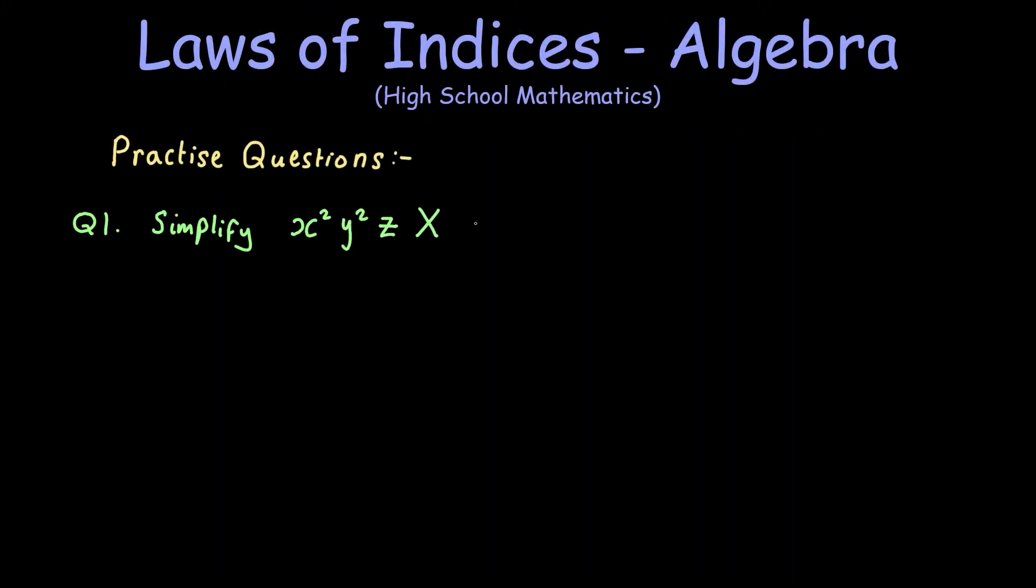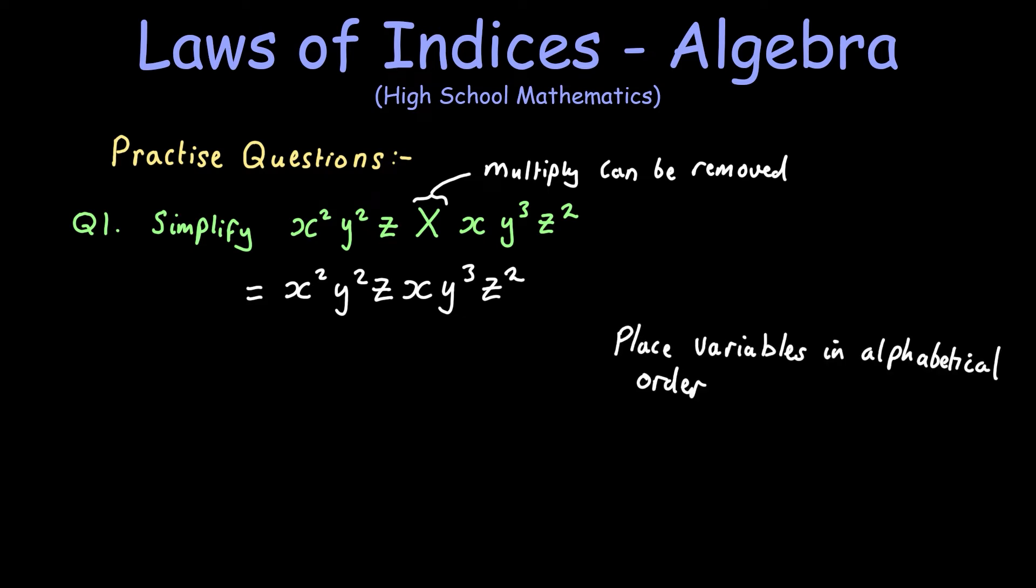Now this is a rather simple expression to simplify, because we only have to use one of the laws of indices here. So all we need to do is place the variables in alphabetical order, and we've got three bases here. We've got the x base, the y base, and the z base.